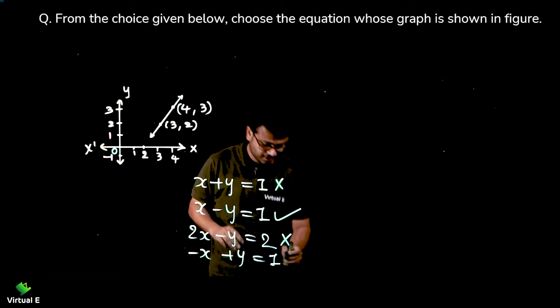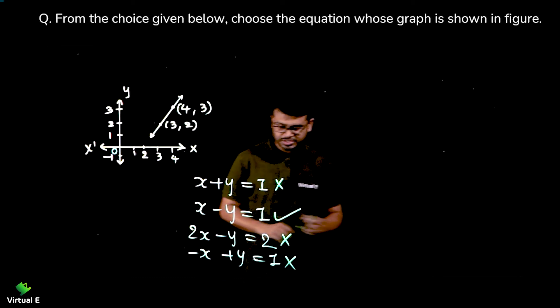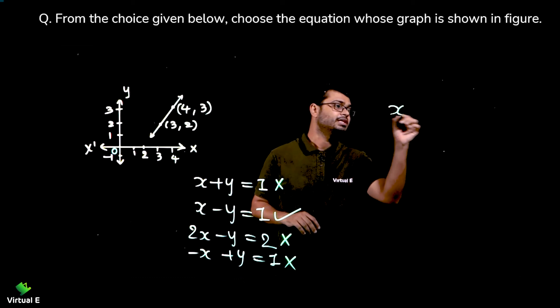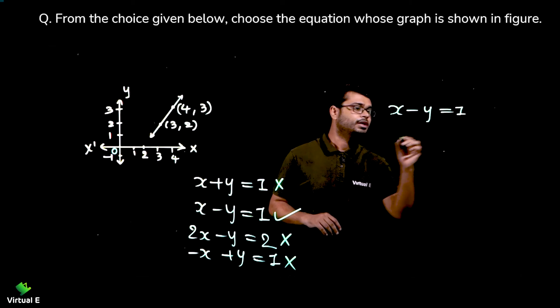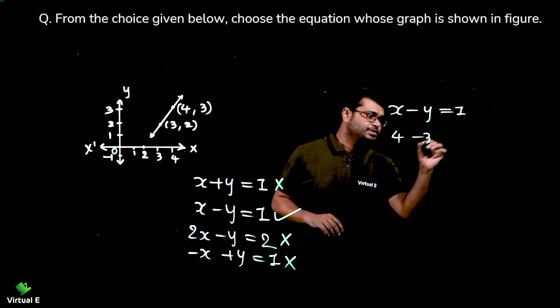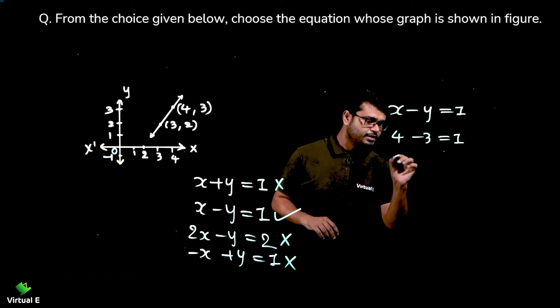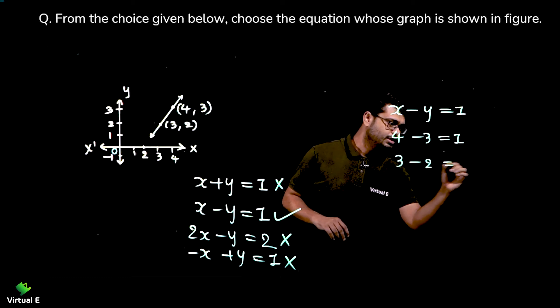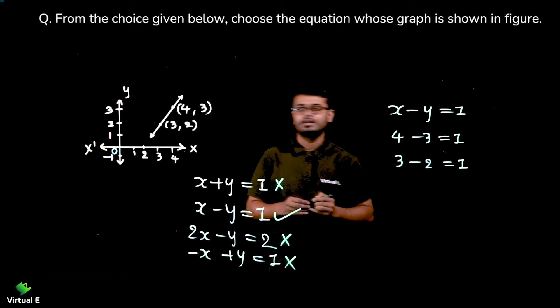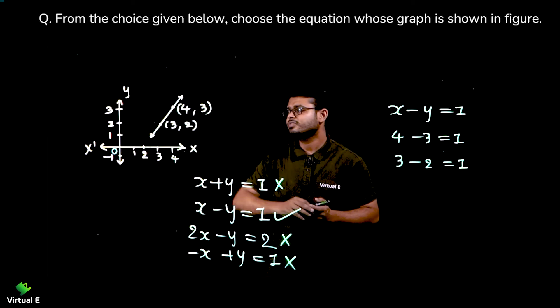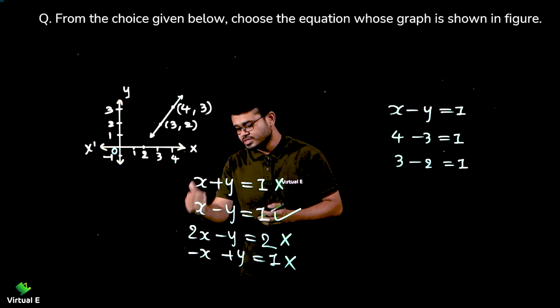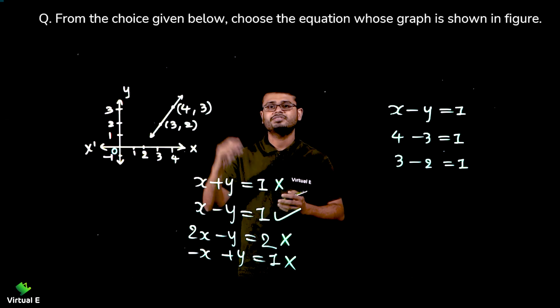So which is the correct choice? The correct choice is x minus y is equal to one. You can check: four minus three is equal to one and three minus two is also one, right. So this is how we select when we have few choices of the equation and graph is given to us.